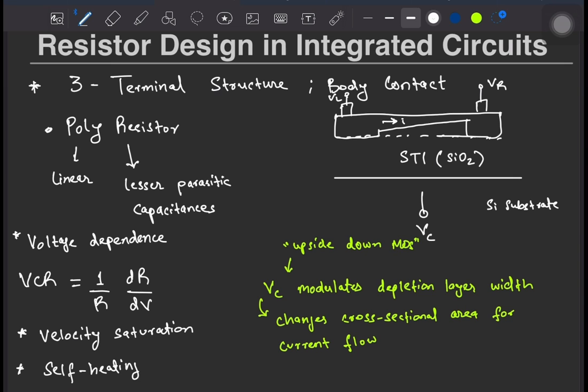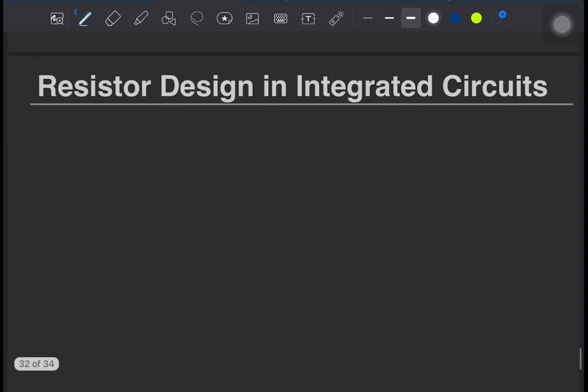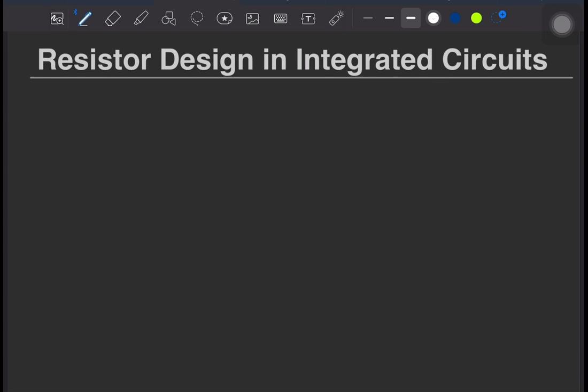Before we conclude this video, I would like to mention one simple layout concept. Suppose you want to fabricate a large resistor and you design the L and W values as per the parameters we discussed today. It might happen that your L would turn out to be very large. So when you lay it out, it would look something like this.